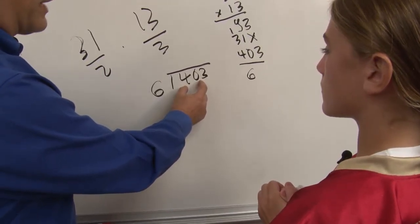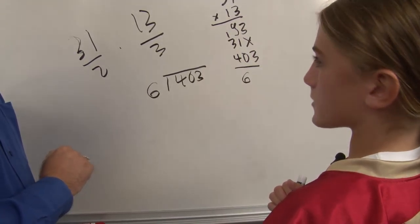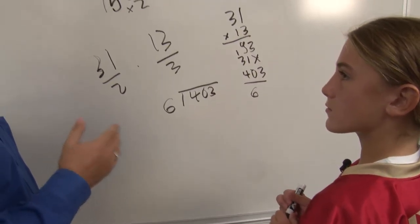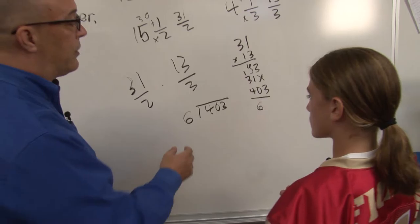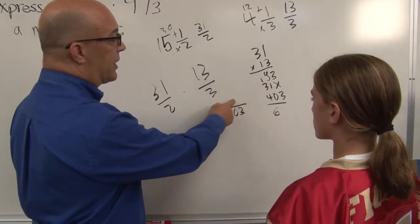What is a number that is close to 40 that 6 will go into without going over? 36. 36. So that would be 6 times? 6. All right, so how about if we do 60 first.